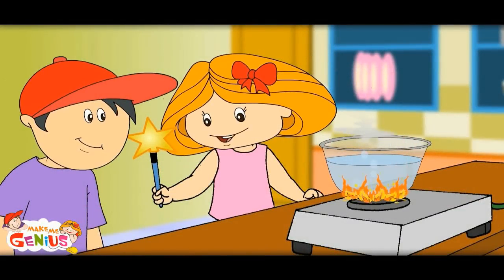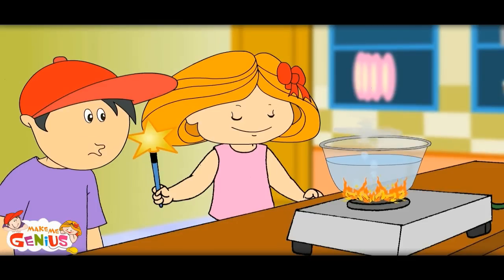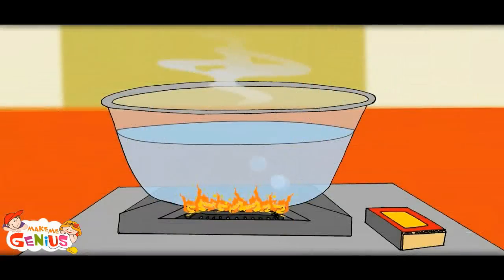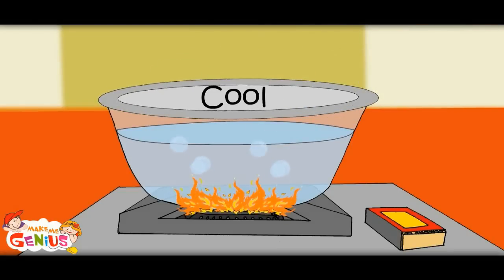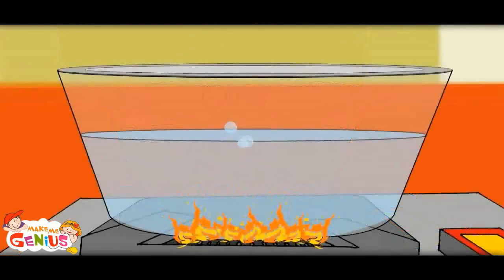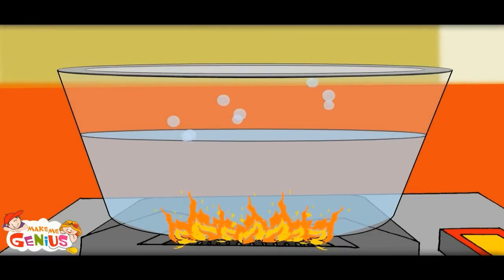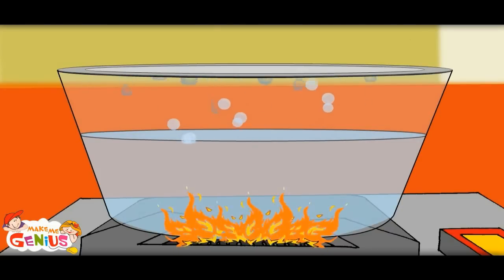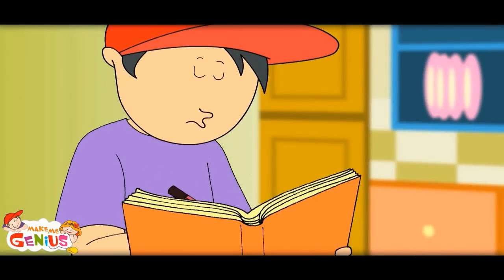Let me show you how to make rain at home. Water turns into vapor due to heating, like the sun heats water in ponds and rivers. Let me put a cover on it. Water gets evaporated due to heat, reaches the cover, and since the cover's temperature is low, it condenses.